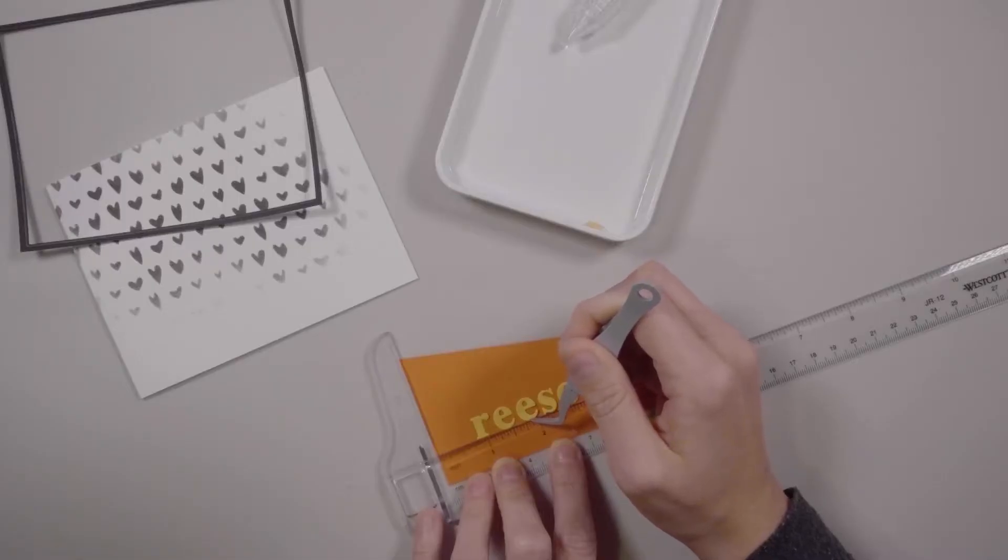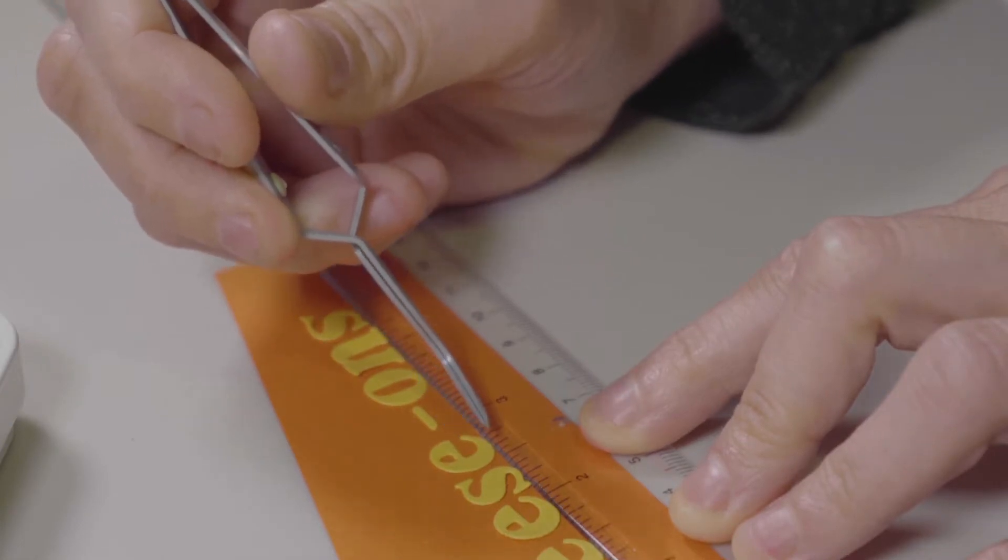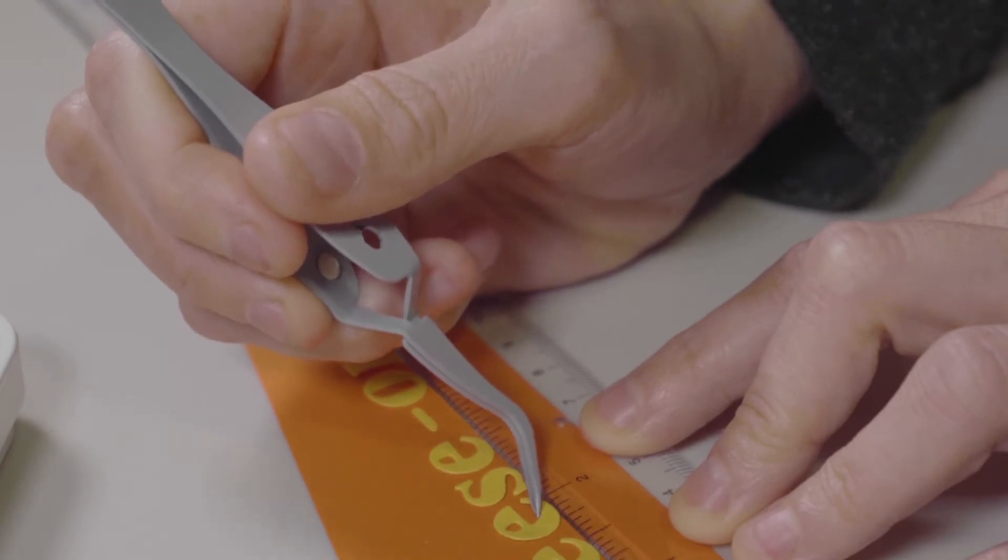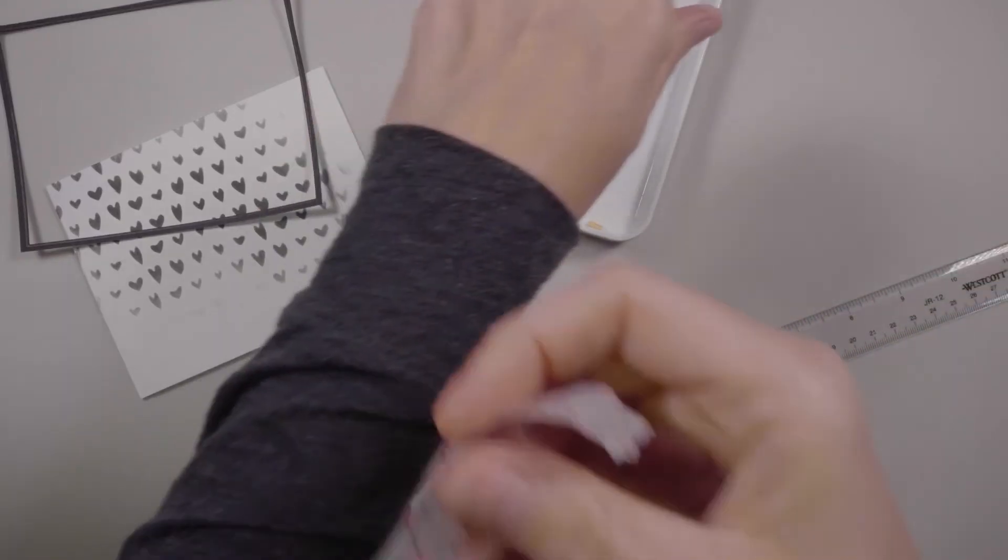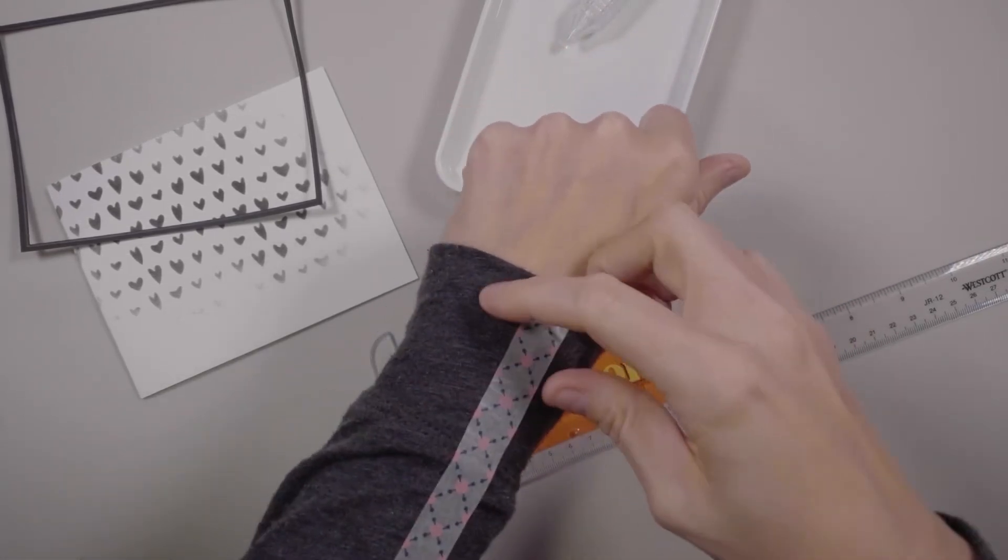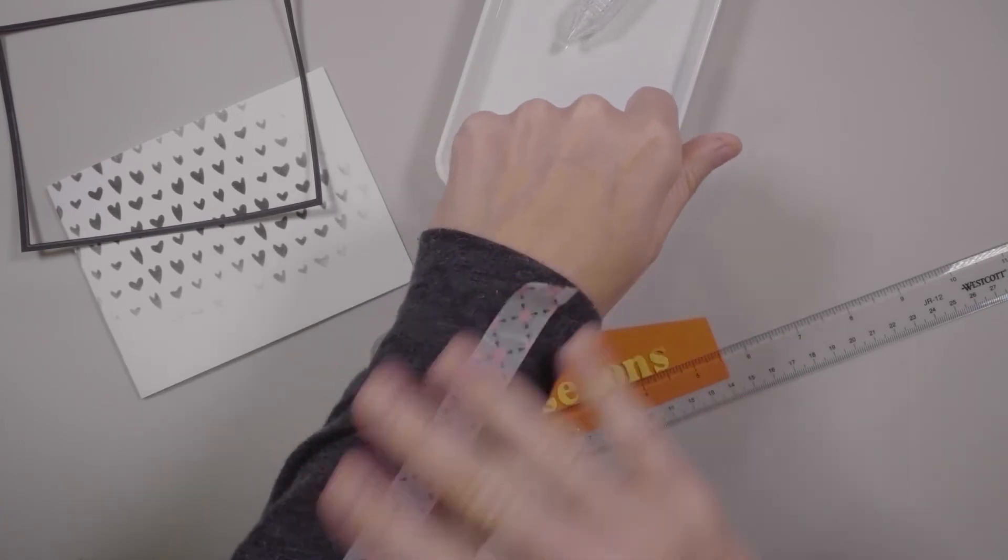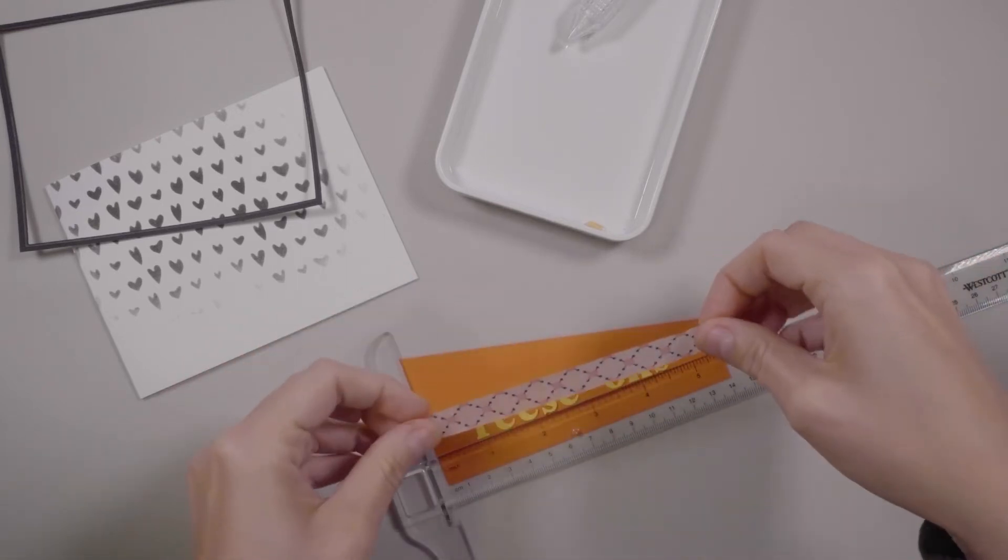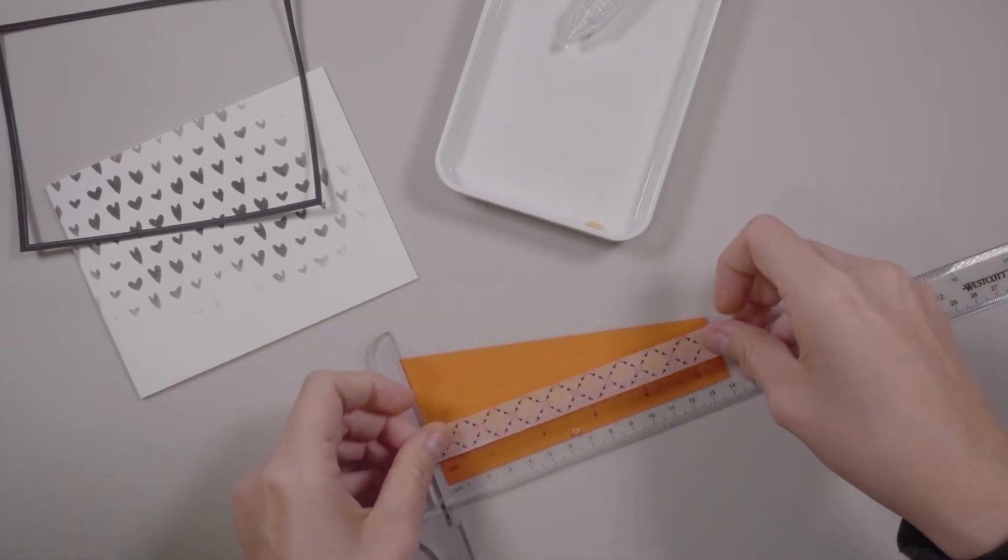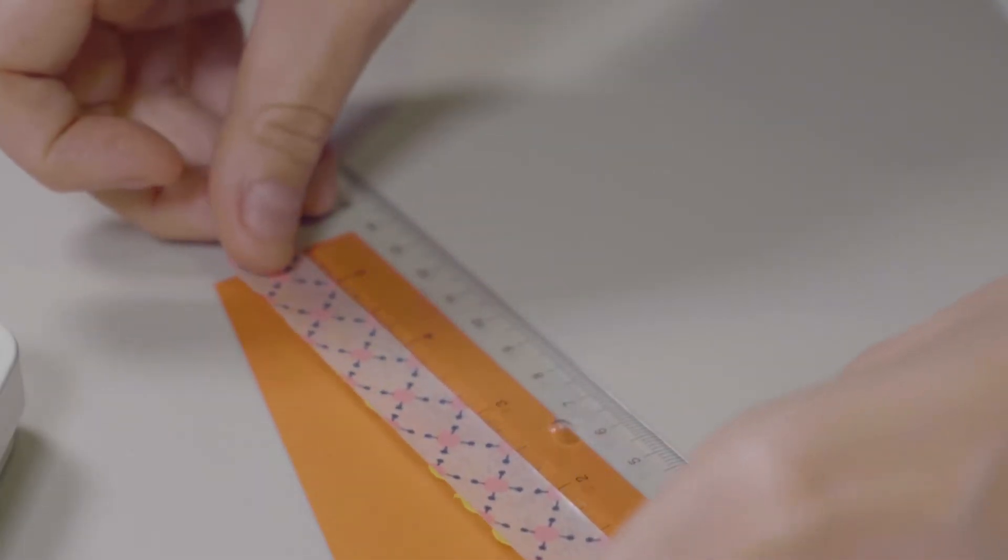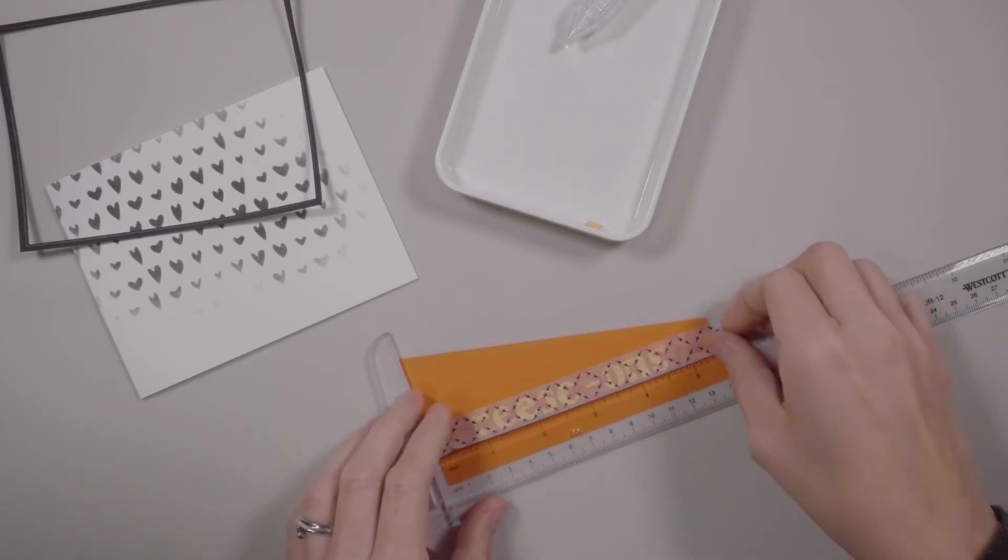Now I'm using a set of tweezers here to straighten out my letters. Those E's kept wanting to turn so I guess there was a little hair pulling still. Once they're lined up to your caliber of OCD you're gonna grab a strip of washi tape and press it against some fabric. So right here I'm just doing it on my shirt sleeve a couple times. Basically I'm trying to remove a fair amount of the tape's tack.